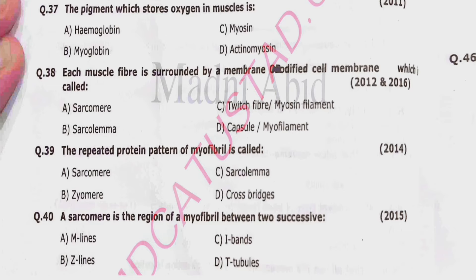Question 37: The pigment which stores oxygen in muscles is hemoglobin, myoglobin, myosin, or actinomyosin. Correct option is beta — myoglobin.